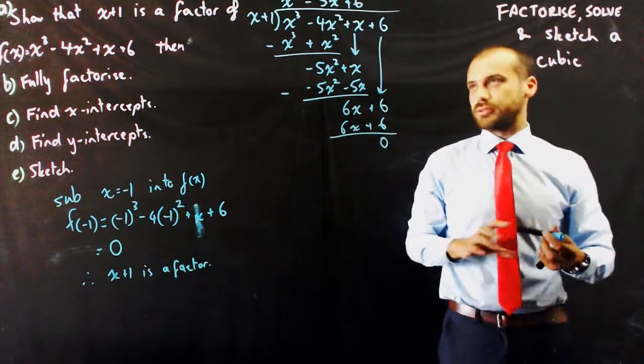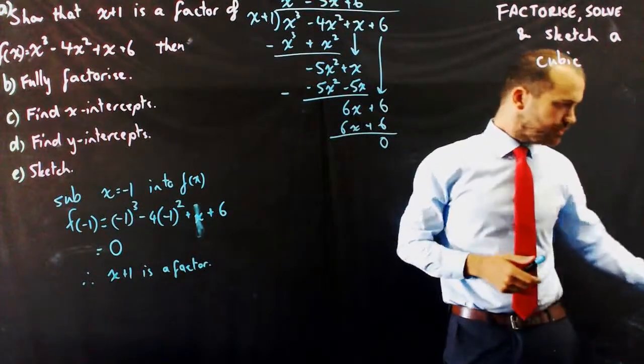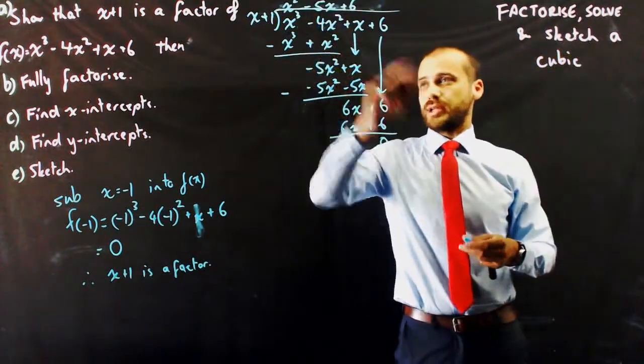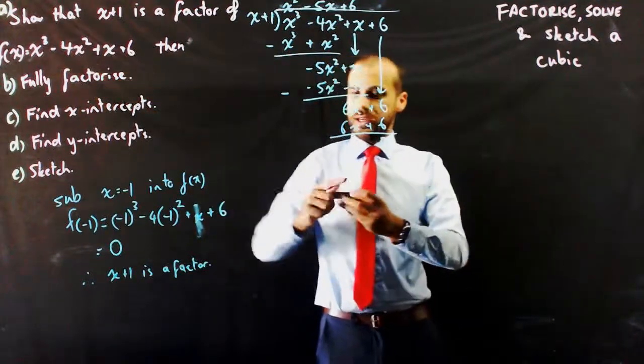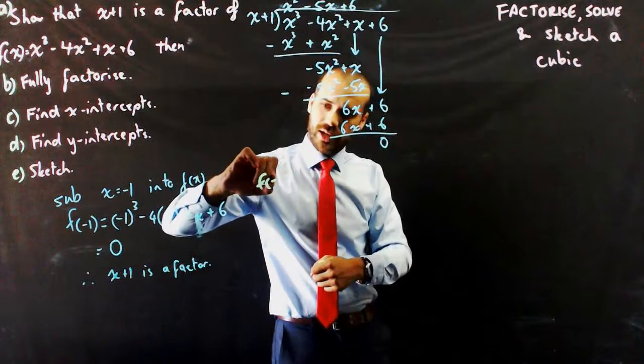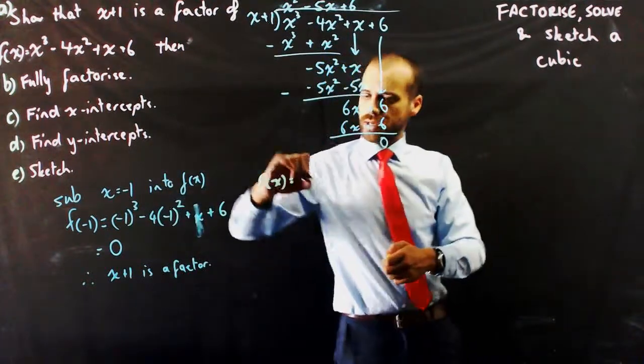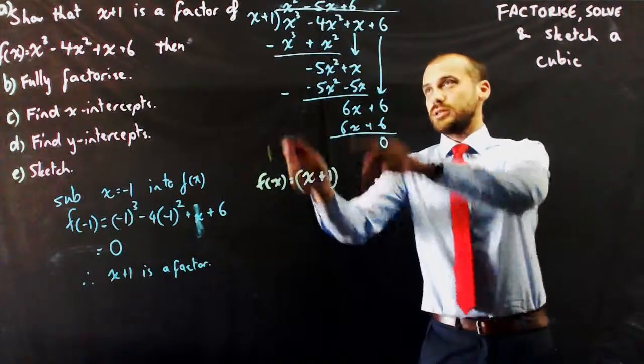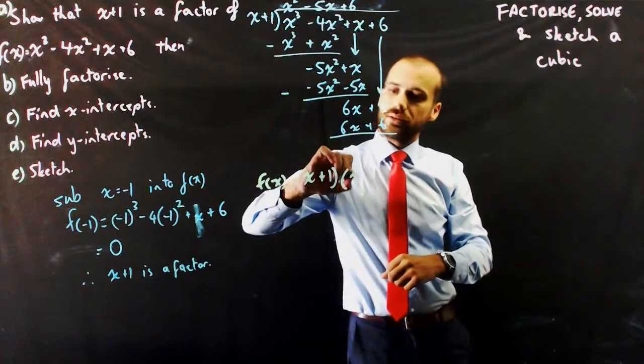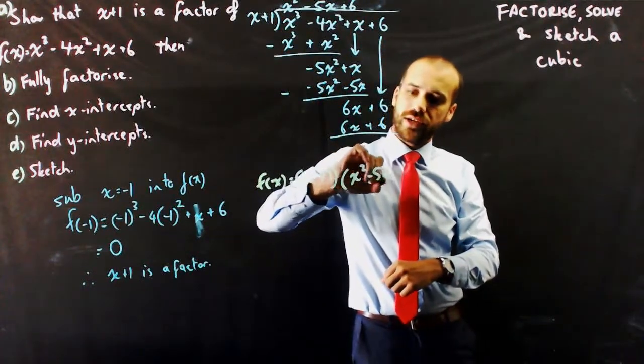Okay. So, oops, I have fallen off your screen. x squared minus 5x plus 6. So, now I can rewrite f of x as f of x equals x plus 1 times that new thing x squared minus 5x plus 6.